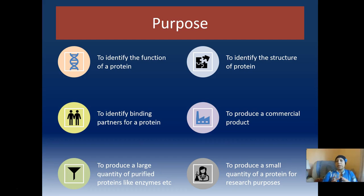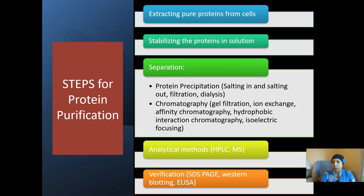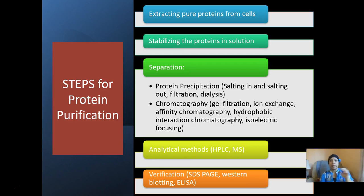Within a research setting, it could be to produce a smaller amount of that protein for research purposes. Before we purify proteins we first have to extract all the proteins in the cell, since it's hard to take just one protein out specifically right away. There are many methods we can use, and many steps to go from that complex mixture of all the proteins in the cell all the way down to just the one protein we want — starting by extracting proteins and removing lipids, DNA, RNA, and everything else.